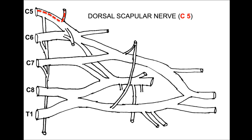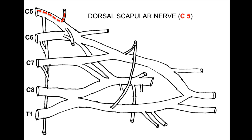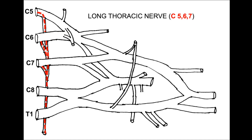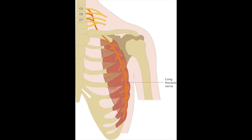The dorsal scapular nerve has only motor fibers from the C5 root, supplying the levator scapulae and rhomboids major and minor. The long thoracic nerve receives fibers from C5, C6, and C7 only, with no sensory supply — only motor supply to the serratus anterior muscle.